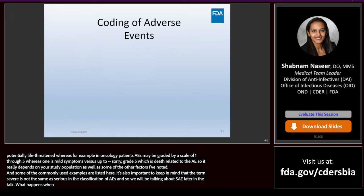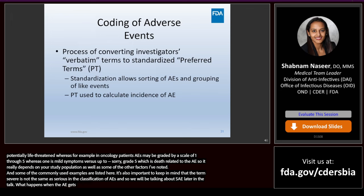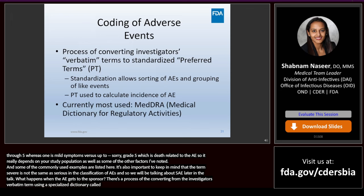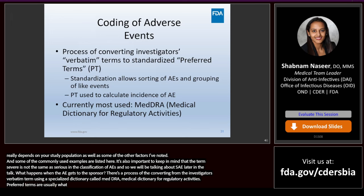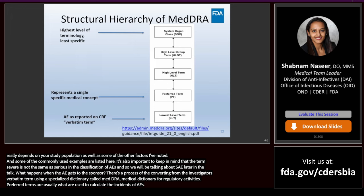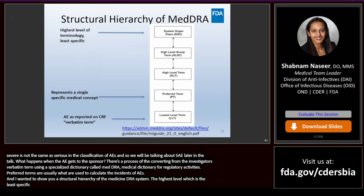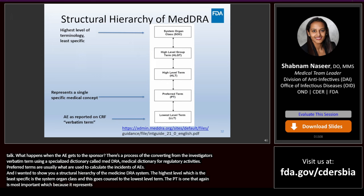When the AE report gets to the sponsor, there's a process of converting from the investigator's verbatim terms to standardized preferred terms using a specialized dictionary called MedDRA — the Medical Dictionary for Regulatory Activities. MedDRA can be used to sort AEs and group like events, and preferred terms are usually what are used to calculate the incidence of AEs. The highest level of terminology, which is the least specific, is the system organ class or SOC, going down to the lowest level term. The preferred term is most important because it represents a single specific medical concept.